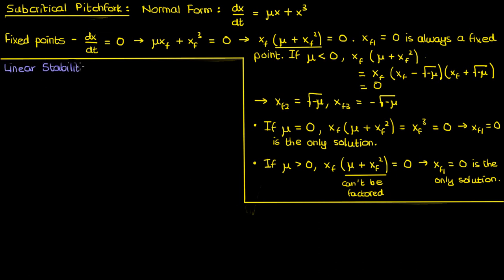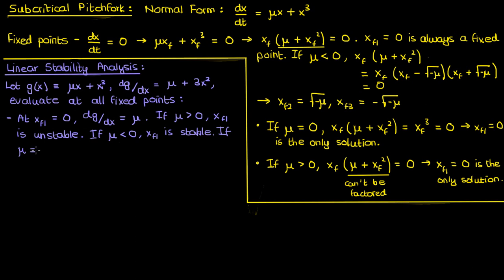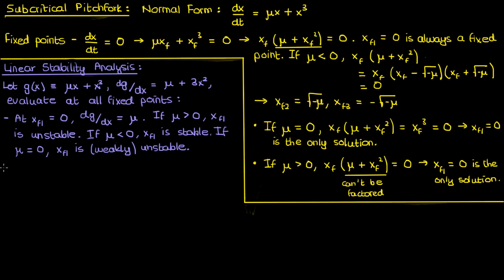To get a better idea of what's going on we'll again perform linear stability analysis. We let g(x) = μx + x³, take the derivative of g with respect to x, and evaluate at each fixed point. Evaluating dg/dx at xf = 0: if μ is positive the fixed point is unstable; if μ is negative it is stable; and if μ = 0, xf₁ is weakly unstable. This weak instability isn't captured by linear stability analysis, which is why dg/dx = 0 at μ = 0 even though the fixed point is actually unstable. Drawing the phase portrait at μ = 0 confirms this: the derivative is positive to the right (x increases) and negative to the left (x decreases), so the fixed point at 0 is weakly unstable.